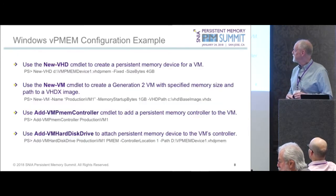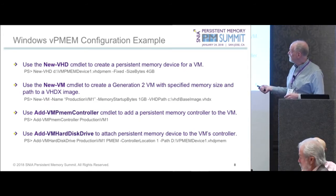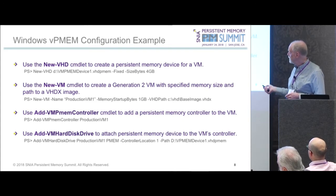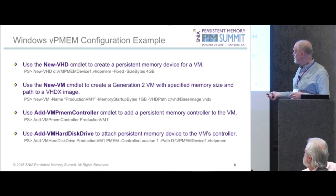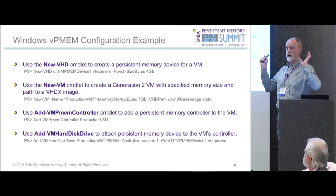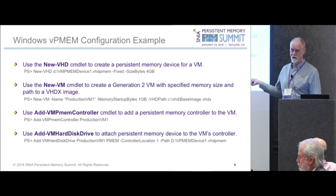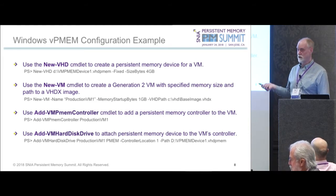To ground it concretely, here is a configuration example using just four PowerShell commandlets. First, create a VHD — a four-gig PMEM device. Then create a Gen2 VM to receive it. Add a VM PMEM controller to that device. Finally, attach the VPMEM device to that controller — and the VM just got a virtual PMEM device. Note that some command arguments may be subject to change; all this is in the 1707.4 preview.